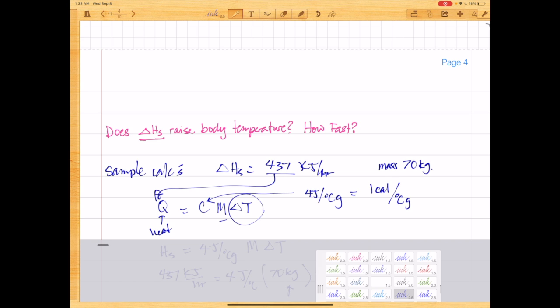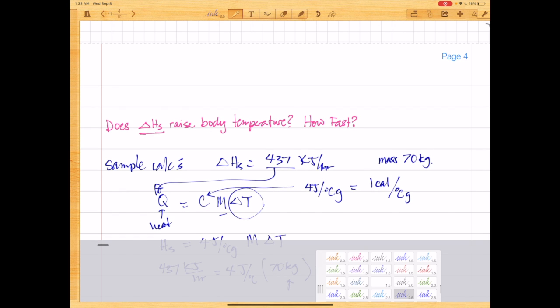So we're going to use the specific heat equation, so the heat Q, so we put in our delta HS here, and Q equals CM delta T.